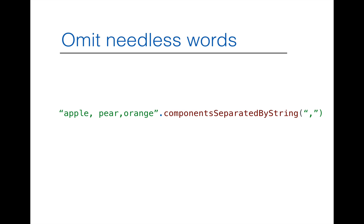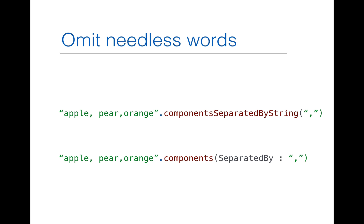Another change: `componentsSeparatedByString` has become `components(separatedBy:)`. The method name has been shortened to `components`, and the first parameter label `separatedBy` is now included. The action of `components` has been kept, and the preposition `separatedBy` has been moved into the parameter label. That is new with Swift 3.0.